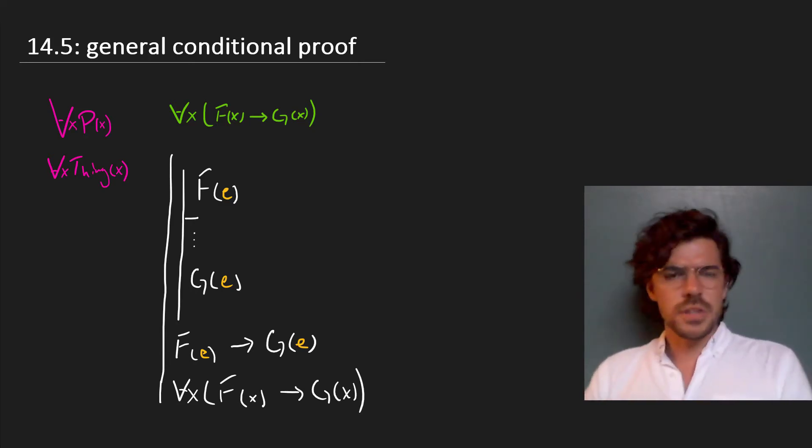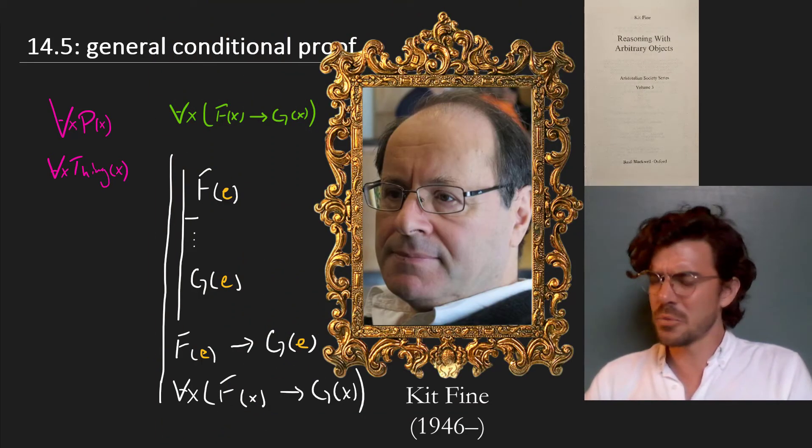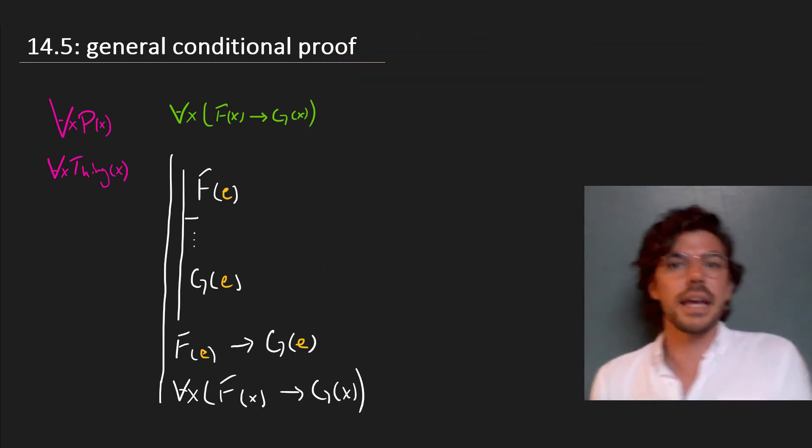What's going on when we do this is a bit of a tricky question to answer. And I actually just read a book called Reasoning with Arbitrary Objects by Kit Fine, which tries to grapple with this question, what these arbitrary objects are. In any case, here's an example of how this can work in action.